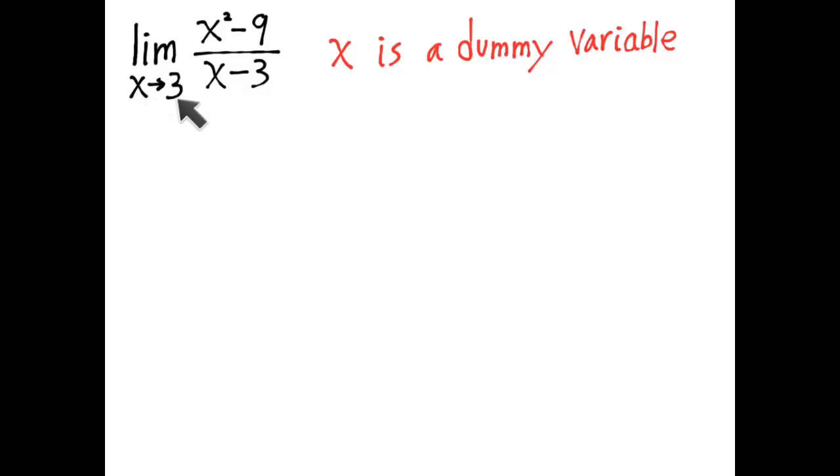It's holding the place of numbers in the two-sided neighborhood around 3. And as those numbers get closer and closer to 3, this expression gets closer and closer to some constant. And that constant has nothing to do with x. x is a dummy variable. I could replace it with any other letter in the alphabet and it would mean the same thing.